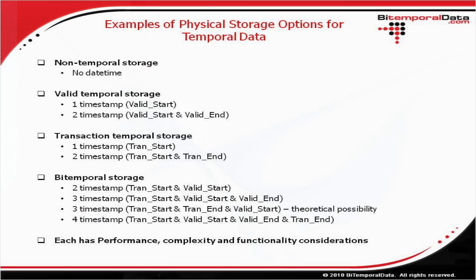An interesting thing to think about with these approaches is candidate keys. For the two-timestamp valid temporal or two-timestamp transaction temporal approach, the candidate key requires that the time period of transaction start and transaction end cannot overlap with the period of any other row. So it's a complex primary key constraint that is needed.